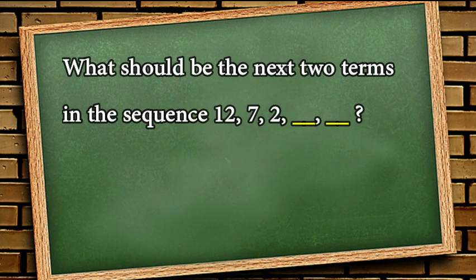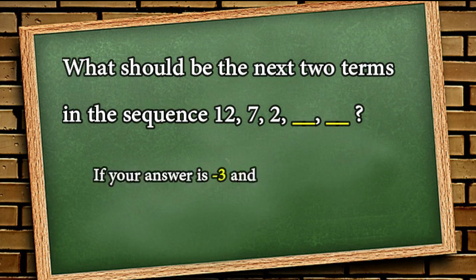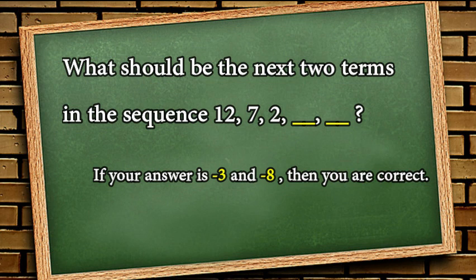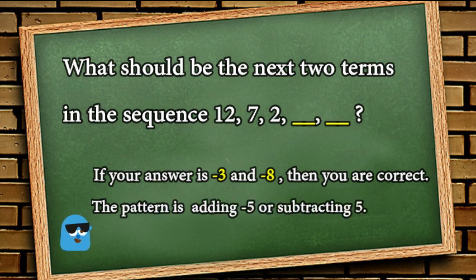Let us try if we can determine the patterns in the next examples. What should be the next 2 terms in the sequence 12, 7, 2? If your answer is negative 3 and negative 8, then you are correct. How did you get it? Very good! The pattern is adding negative 5 or subtracting 5.